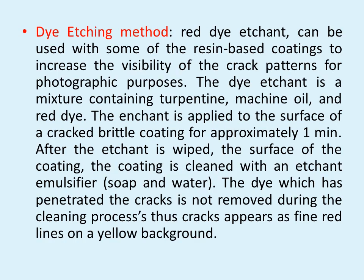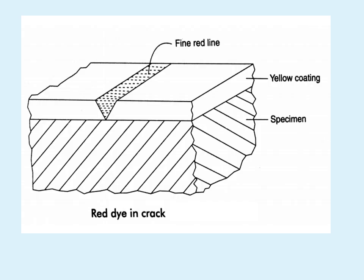Dye etchant method: Red dye etchant can be used with some of the resin-based coating to increase the visibility of the crack pattern for photographic purposes. The red dye etchant is a mixture of turpentine, machinoid and red dye. The etchant is applied on the surface of the brittle coating for approximately one minute. After the etchant is wiped, the surface of the coating is cleaned with an etchant emulsifier that is soap and water. The dye which has penetrated in the cracks is not removed during the cleaning process. Thus, cracks appear as red fine lines on a light background. On the crack, the red dye line is formed which is settled into the crack.